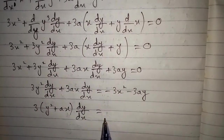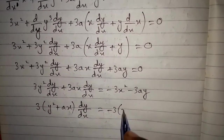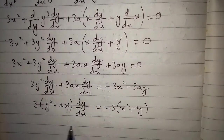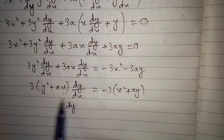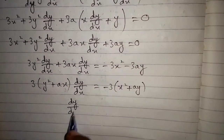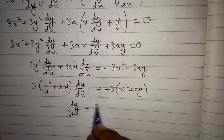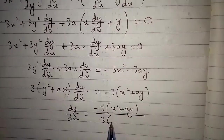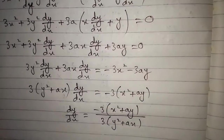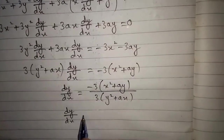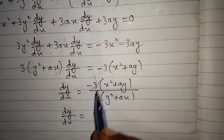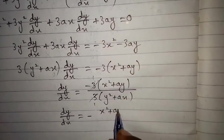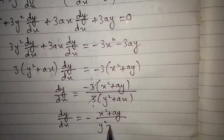On the right side we factor out −3 to get −3(x² + ay). Dividing both sides gives dy/dx = −3(x² + ay) / 3(y² + ax). Cancelling the 3s, we get dy/dx = −(x² + ay) / (y² + ax). This is the derivative of the given equation.